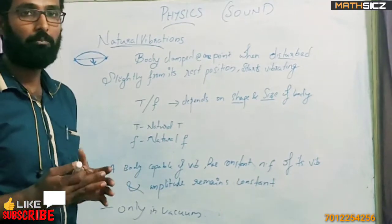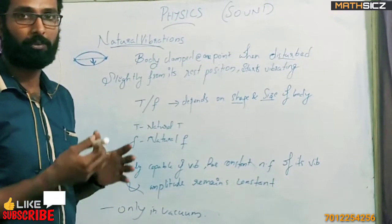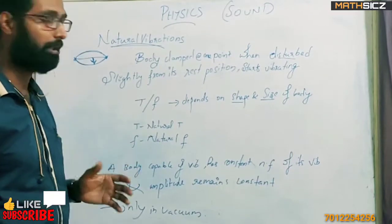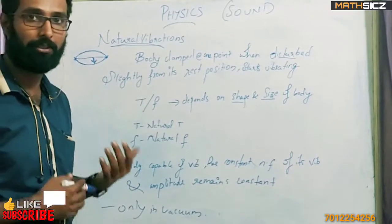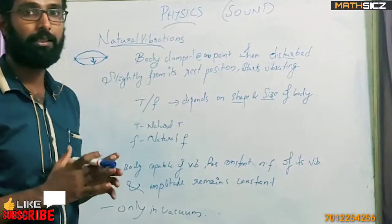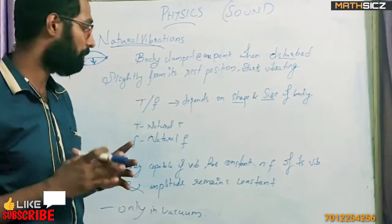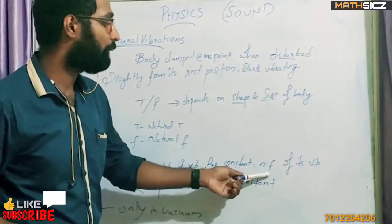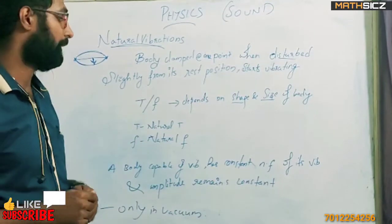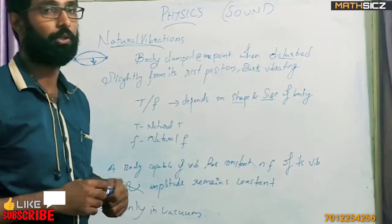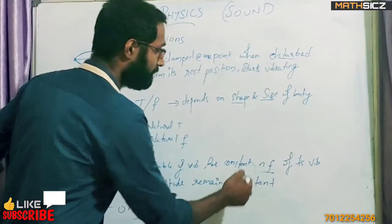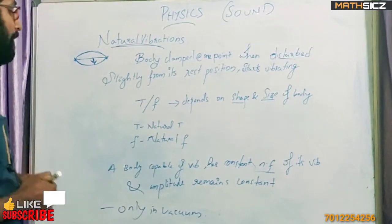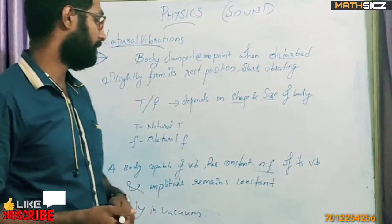That's why all bodies are not able to vibrate in the same way. When a body has a vibrating capability with a constant medium, it is a natural frequency. It has a constant medium and the amplitude remains constant.